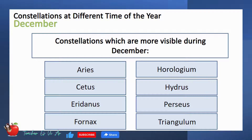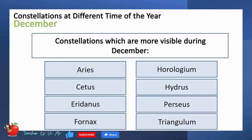Lastly, these are the constellations that we will see more clearly during December: Aries, Horologium, Cetus, Eridanus, Hydrus, Perseus, Fornax, and Triangulum.